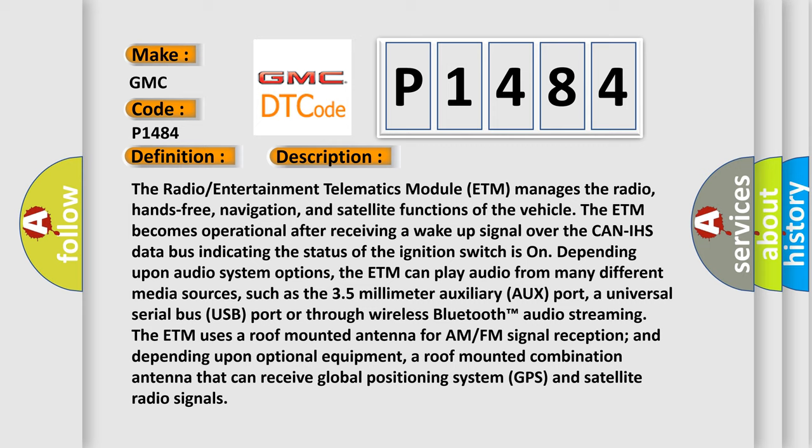The ETM becomes operational after receiving a wake-up signal over the CAN-IHS data bus, indicating the status of the ignition switch is on. Depending upon audio system options, the ETM can play audio from many different media sources, such as the 3.5mm auxiliary port, a USB port, or through wireless Bluetooth audio streaming. The ETM uses a roof-mounted antenna for AM/FM signal reception and, depending upon optional equipment, a roof-mounted combination antenna that can receive GPS and satellite radio signals.